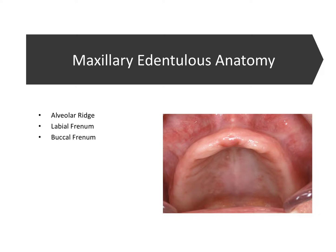We're going to start in this video by talking about maxillary edentulous anatomy. You'll first notice that in this picture there are no teeth, and of course that's the definition of fully edentulous. We'll label the structure that starts posterior, wraps to the anterior, and back to the posterior as the alveolar ridge — one of the two jaw ridges that are extensions of the mandible or the maxilla in this case.